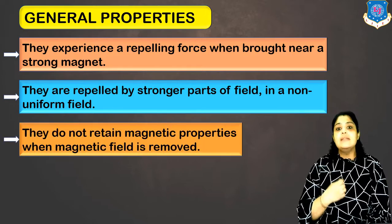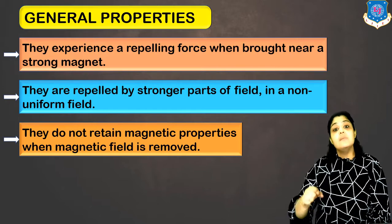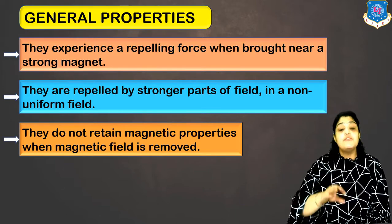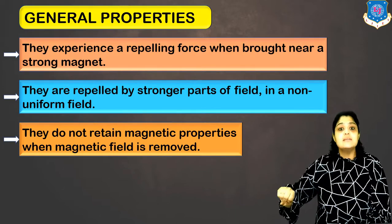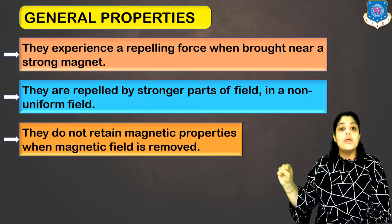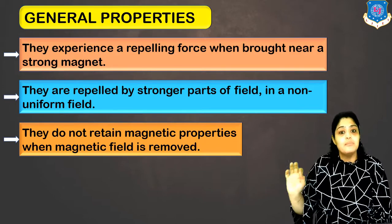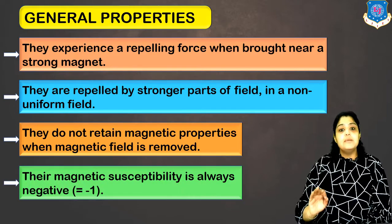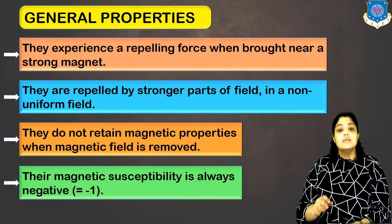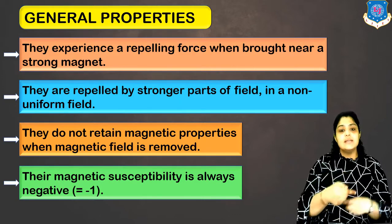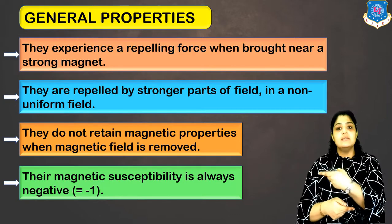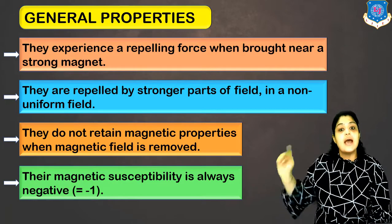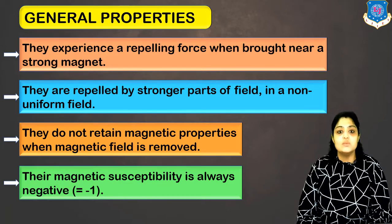They will not retain magnetic properties when the magnetic field is removed. Because they do not have permanent dipoles, when you remove the external magnetic field, they are not going to exhibit any magnetic property. Their magnetic susceptibility is minus one — the magnetization induced is in the opposite direction to the applied field.